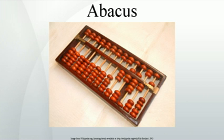Writing in the first century BC, Horace refers to the wax abacus, a board covered with a thin layer of black wax on which columns and figures were inscribed using a stylus. One example of archaeological evidence of the Roman abacus, shown here in reconstruction, dates to the 1st century AD. It has eight long grooves containing up to five beads in each and eight shorter grooves having either one or no beads. The groove marked I indicates units, X tens, and so on up to millions. The beads in the shorter grooves denote fives — five units, five tens, etc. — essentially in a biquinary coded decimal system, obviously related to the Roman numerals. The short grooves on the right may have been used for marking Roman ounces, i.e., fractions.